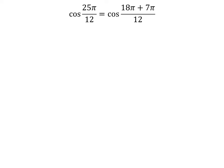25 times pi is equal to 18 times pi plus 7 times pi. So, cosine of 25 times pi upon 12 is equal to cosine of 18 times pi plus 7 times pi upon 12.